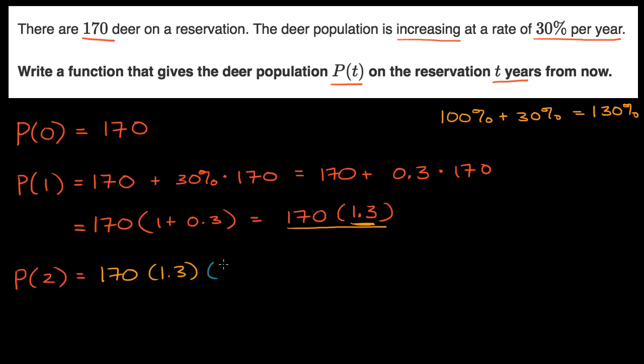So if you're going to grow by another 30%, that's equivalent to multiplying by 1.3 again. Or you could say that this is equal to 170 times 1.3 to the second power.